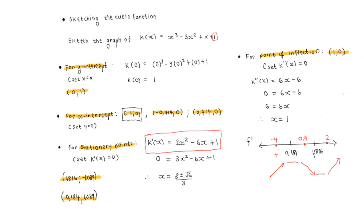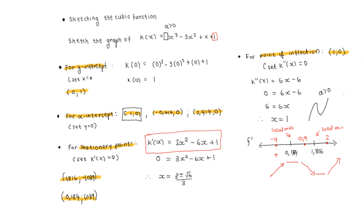We can see that we have a local maximum at 0.184 and a local minimum at 1.816. The value of this will be clearer in the optimization section, but for curve sketching it gives us the shape of our graph — we go up, then down, then up again. This shape corresponds to a being greater than 0. Checking our a value, which is the coefficient of x cubed, we see that yes, a is positive. Now we have all our components ready for the sketch.